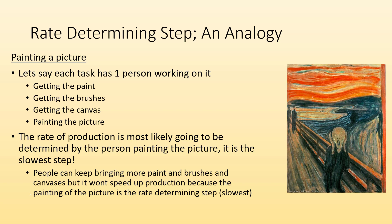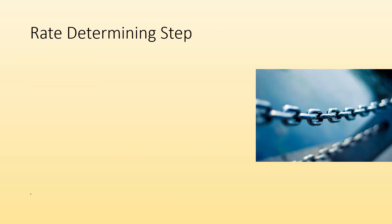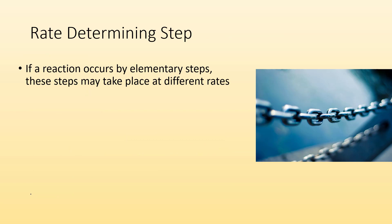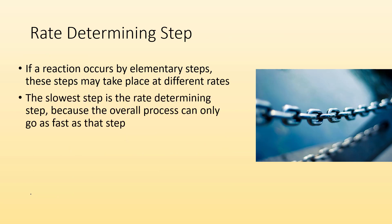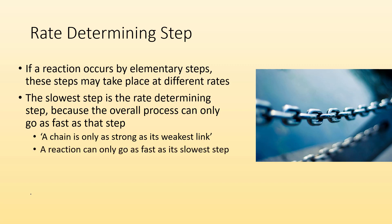So when we're talking about reaction mechanisms with different steps, there's going to be a rate determining step — a slow step that's going to determine the overall rate. If a reaction occurs by elementary steps, these steps may take place at different rates, so one might be faster than the other. The slowest step is going to be the rate determining step because the overall process can only go as fast as that step. A chain is only as strong as its weakest link — a reaction can only go as fast as its slowest step.